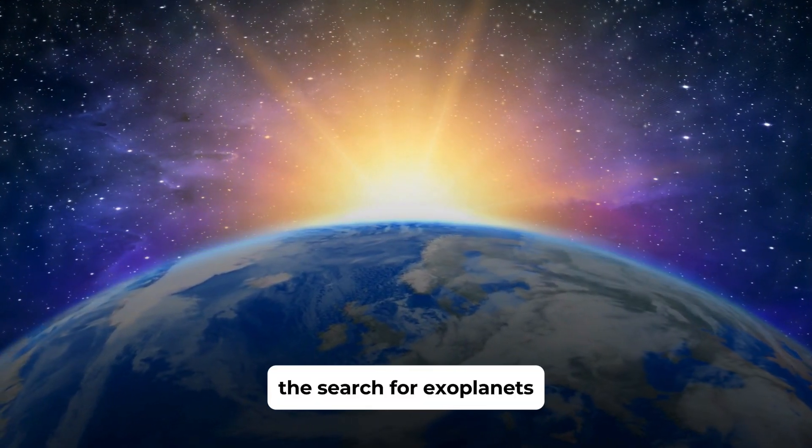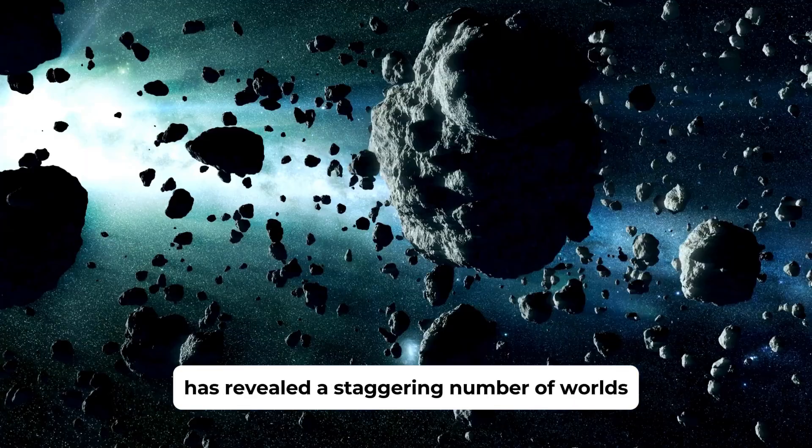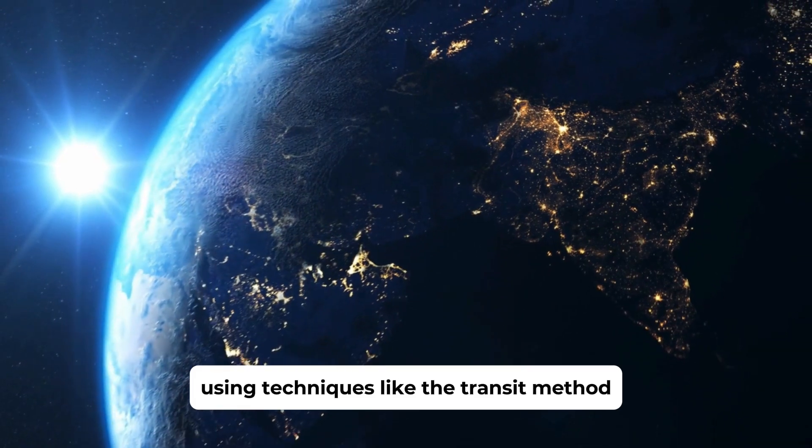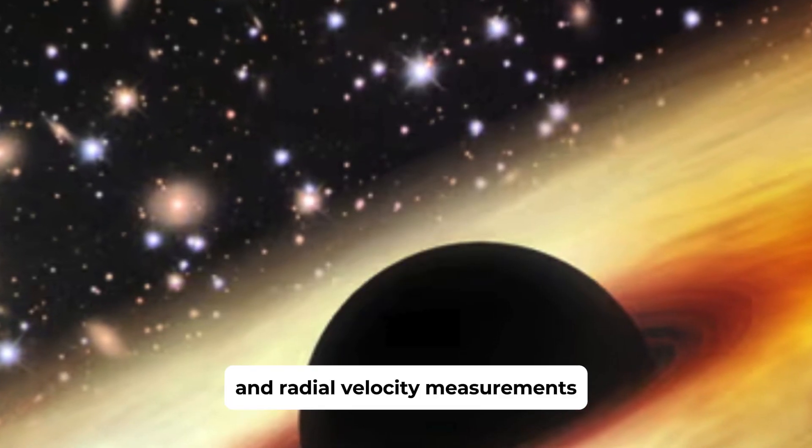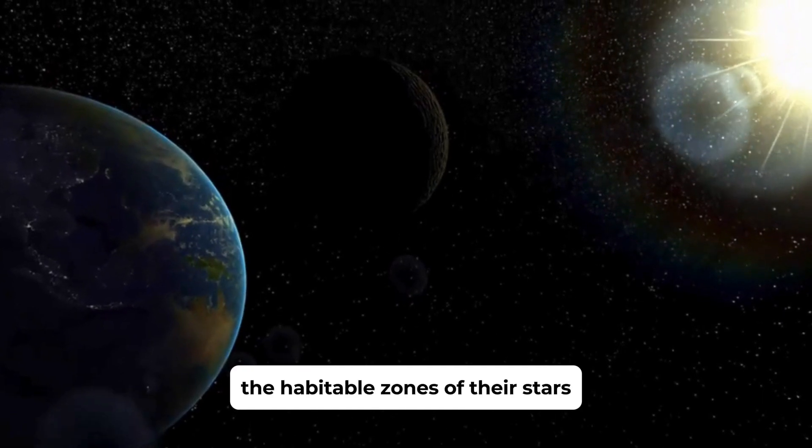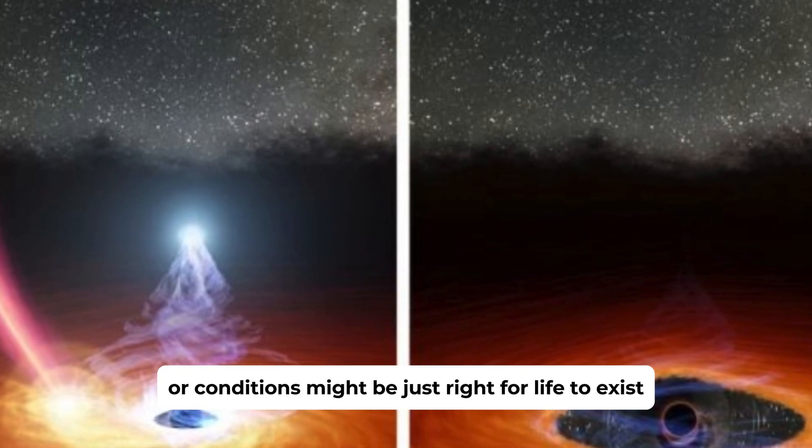The search for exoplanets, planets outside our solar system, has revealed a staggering number of worlds that may resemble Earth in some way. Using techniques like the transit method and radial velocity measurements, astronomers have identified planets that orbit within the habitable zones of their stars, where conditions might be just right for life to exist.